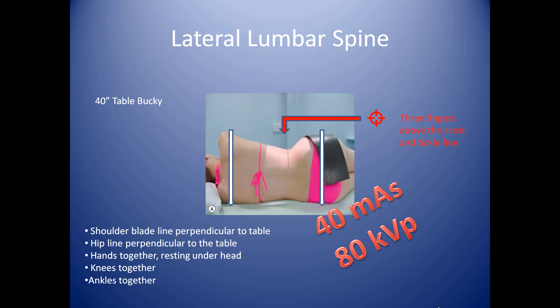A good baseline technique for a lateral lumbar spine is 40 mAs at 80 kVp. There can be many ranges at this level — some patients can require up into the 90s kVp and 150 mAs. Set this as your baseline technique and then build your blocks from there.